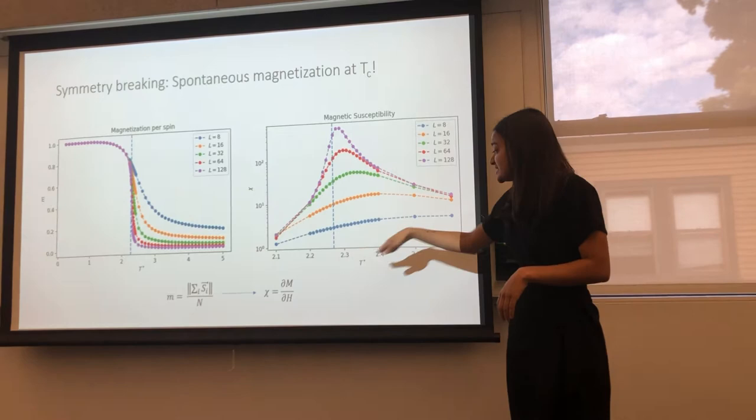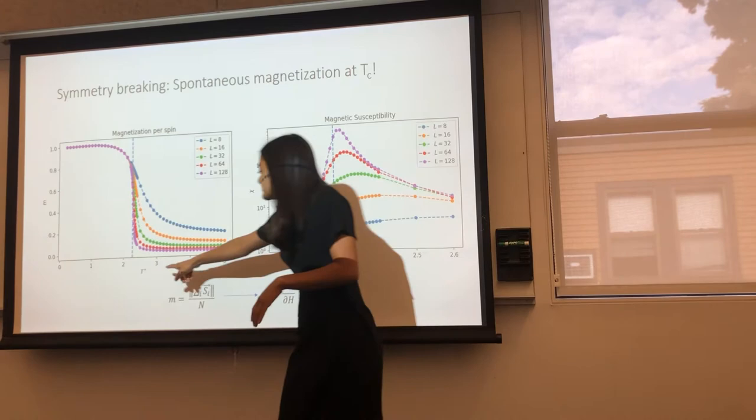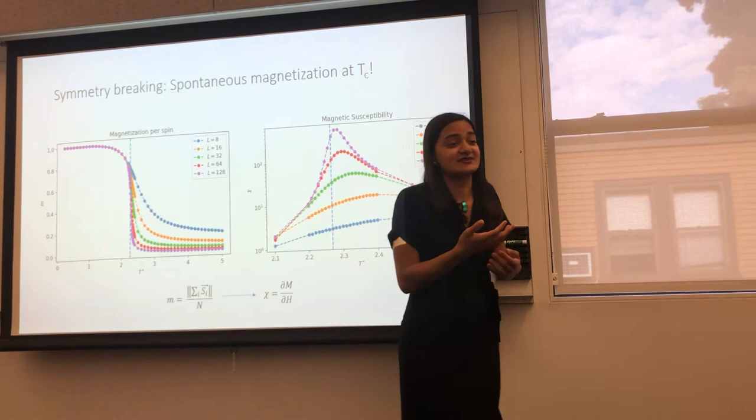And so here I've done numerical simulation of this model with various different lattice sizes shown in different colors. And I plotted temperature on the x-axis and magnetization on the y-axis here. And you can see that at high temperature, the system is disordered, the spins are every which way. But there's a particular temperature that is clearly not equal to zero, where the spins spontaneously align. And this is called spontaneous symmetry breaking.